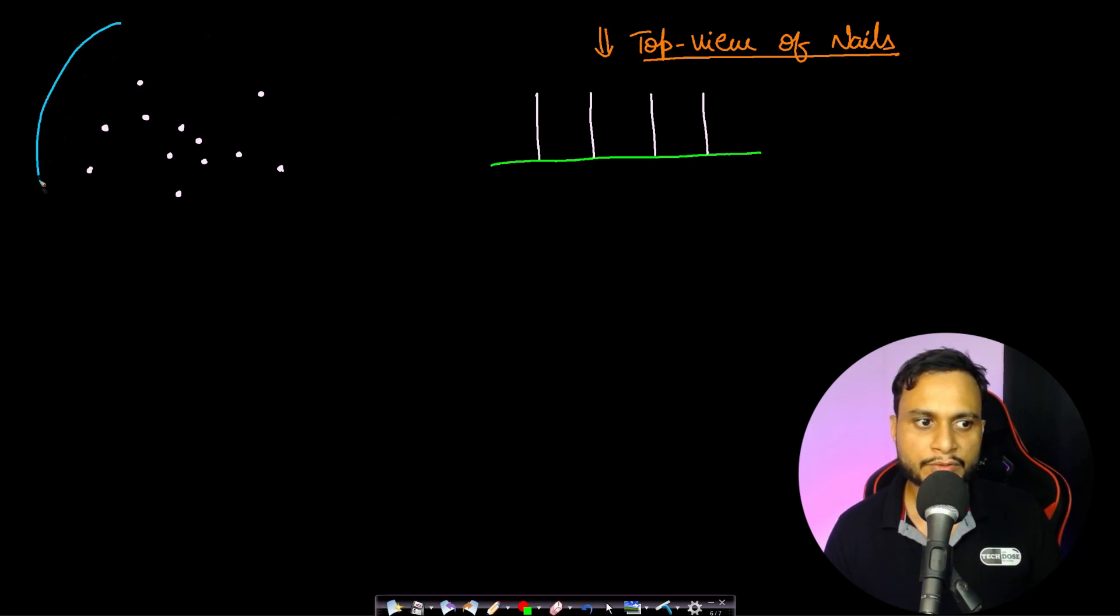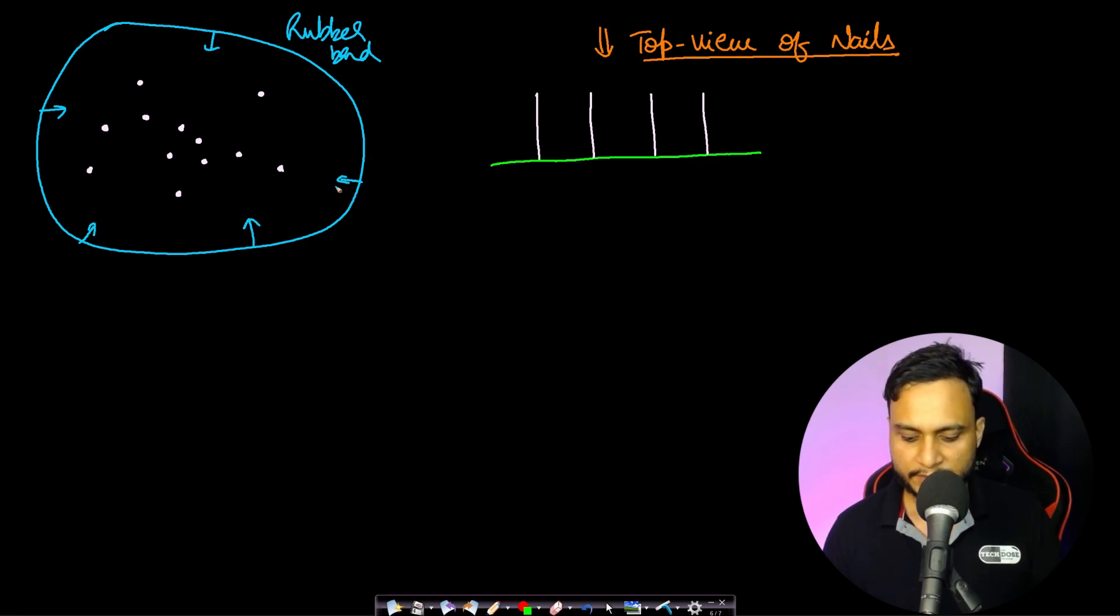When you leave the rubber band, it will try to close up because the rubber is elastic. So it will try to close up from all the ends. And once you leave it, then you imagine about what will be the structure which it will form, like what all are the nails which it will be touching, what all nails will be on the peripheral side.